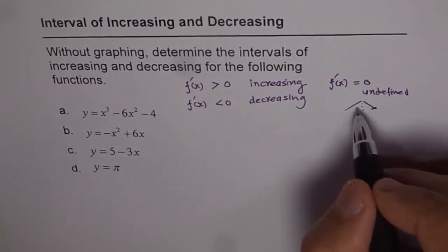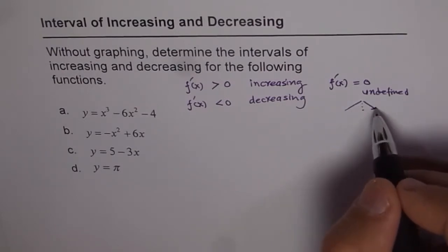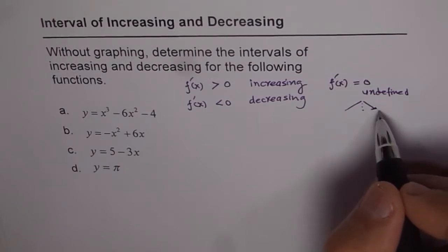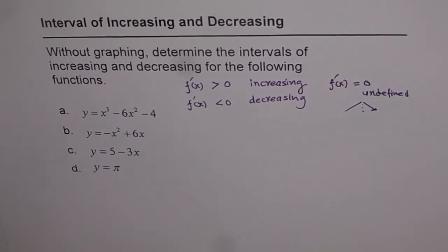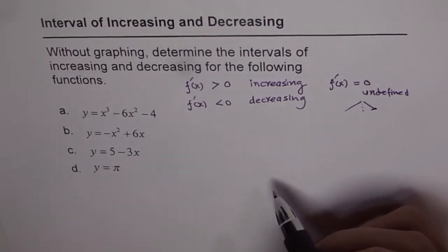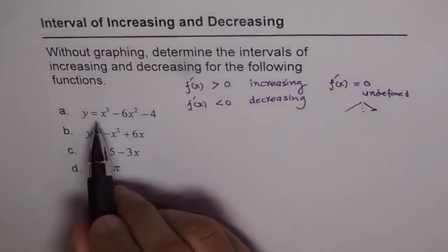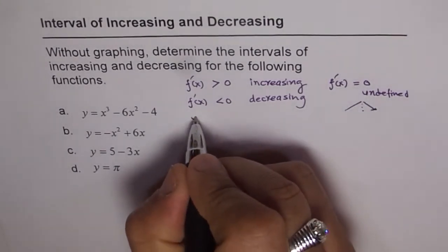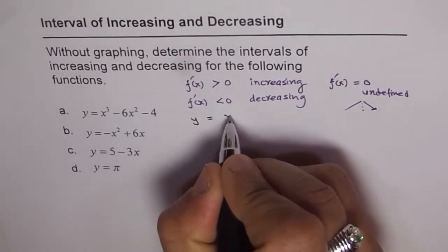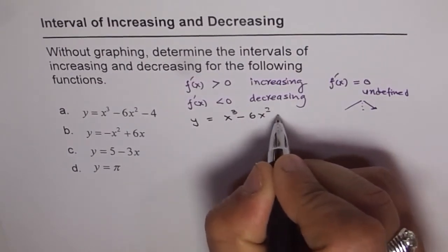If it is positive, that means greater than 0, the function is increasing. If it is negative, then it is decreasing. So that is the policy. Now let's find the derivative of all these functions and figure out the intervals of increasing and decreasing. I will do the first one for you, which is y equals x cubed minus 6x squared minus 4.